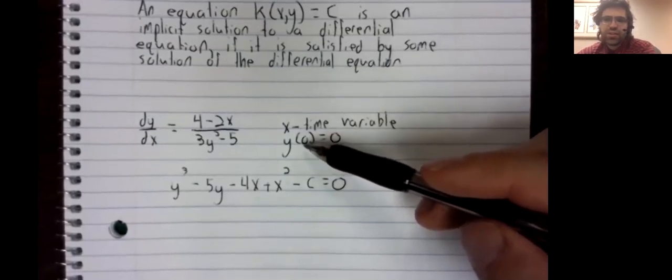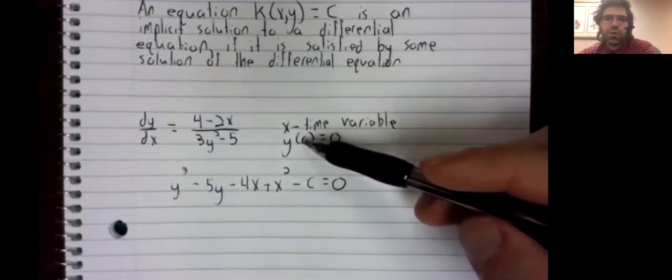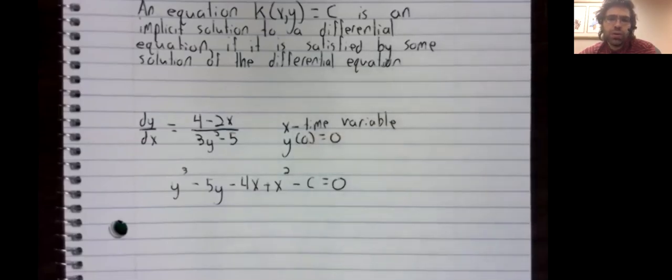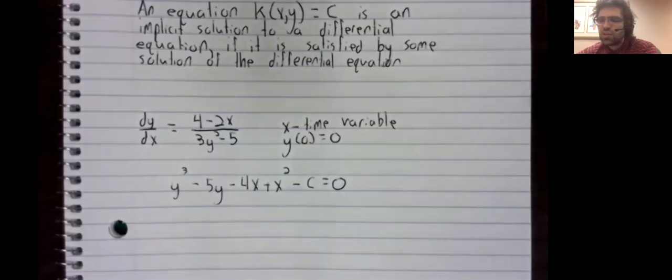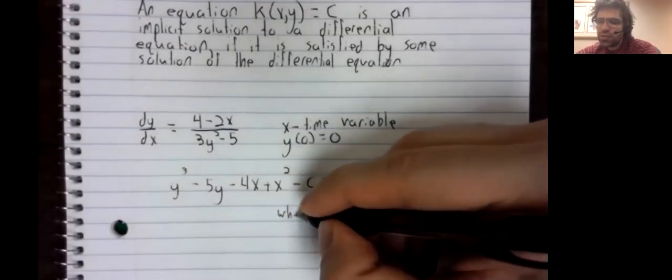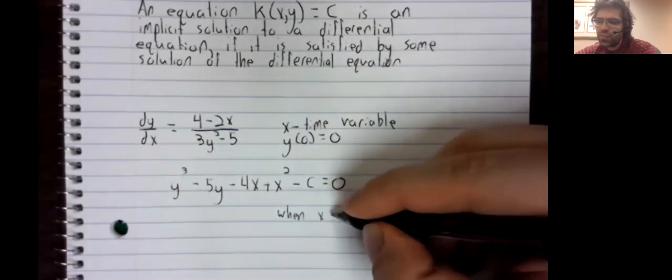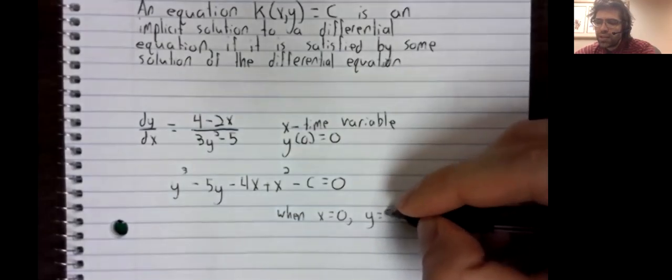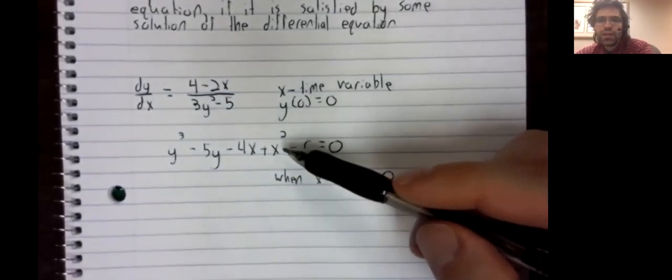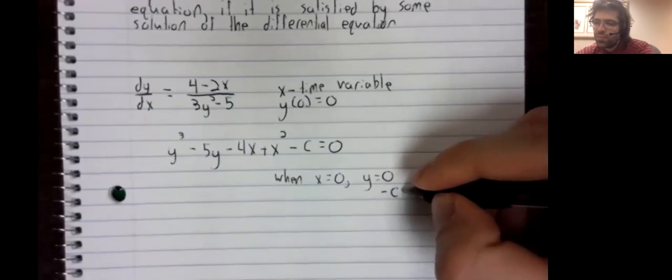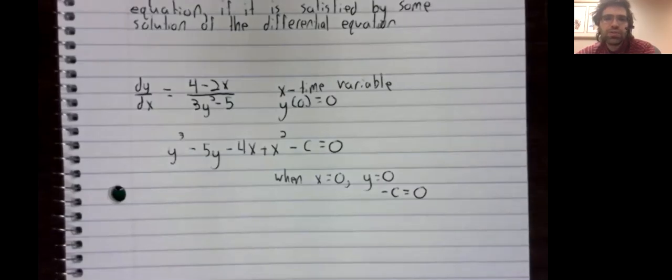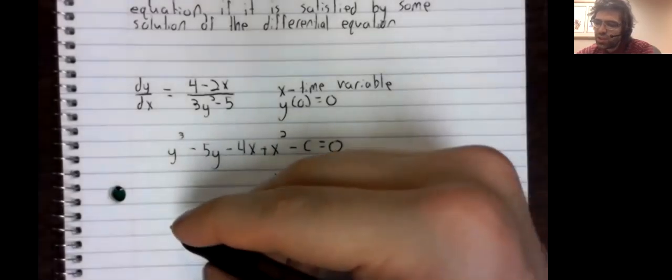And this statement that when x equals zero, y equals zero, lets us solve for c. So when x = 0, y = 0, and this equation becomes -c = 0, so c is zero.